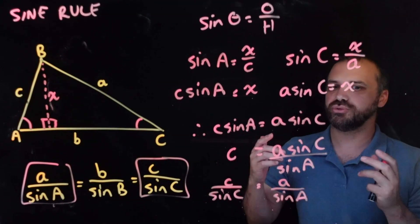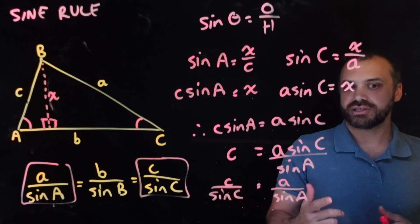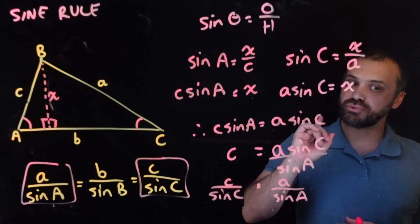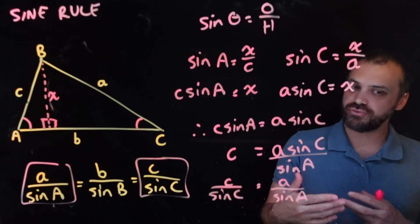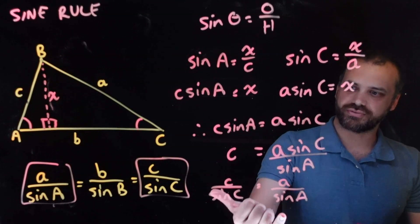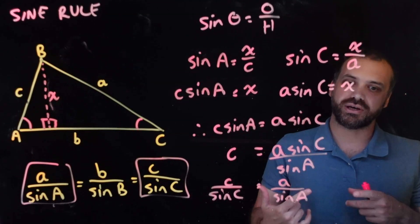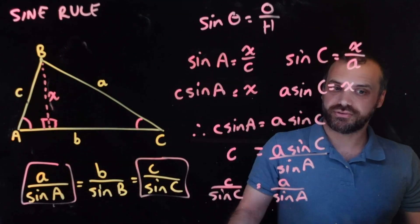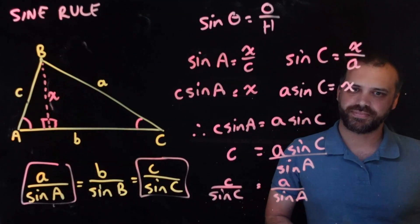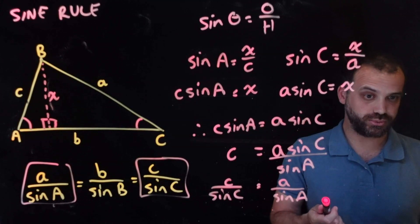The sine rule works, and the sine rule is amazing. You might say this proof is incomplete because we've proven a/sinA equals c/sinC, but not yet that a/sinA equals b/sinB. That's a job for you — try to complete the proof yourself.